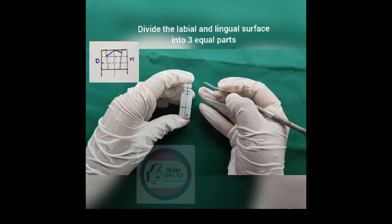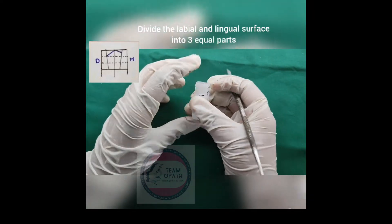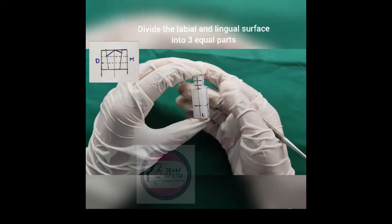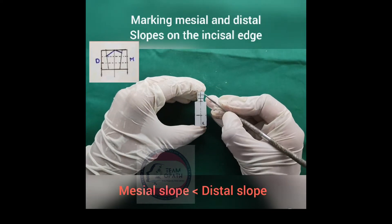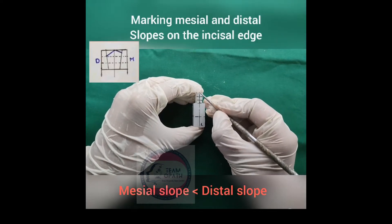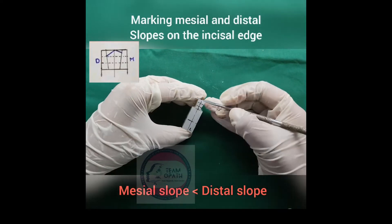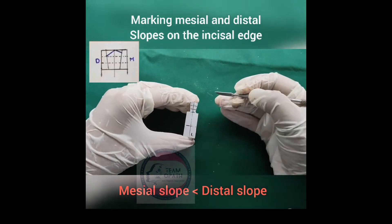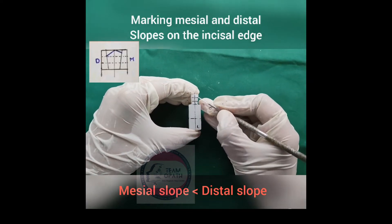After carefully removing the wax, start marking the mesial and distal slopes on the incisal edges. You can see here the distal slope is longer than the mesial slope. Then continue removing the wax.